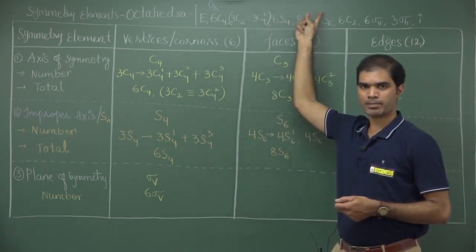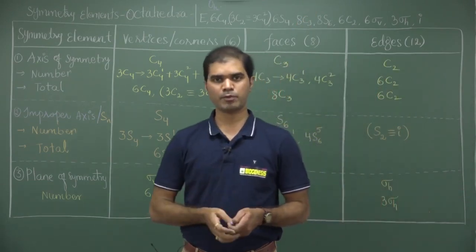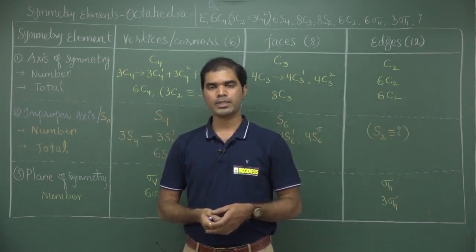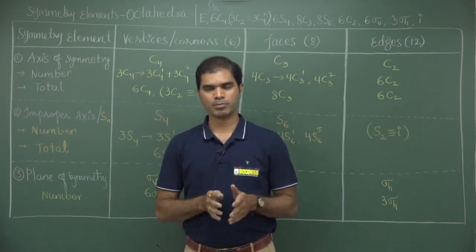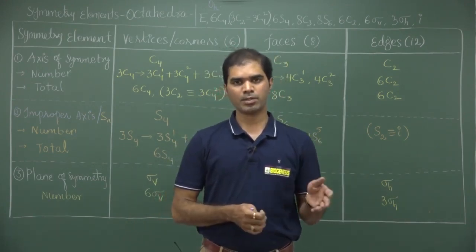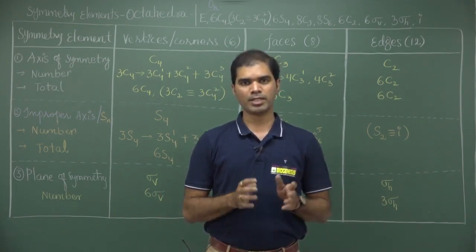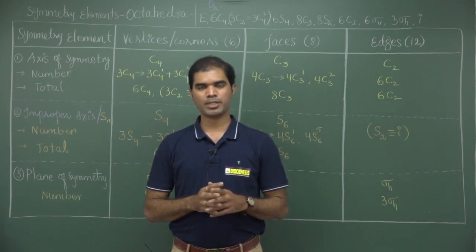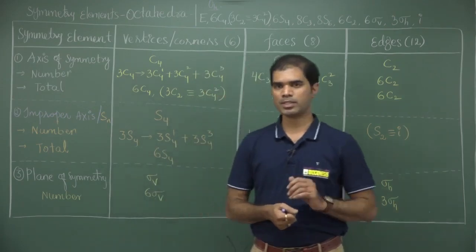All the symmetry elements have been written here. There are C4s present, and C2s that are generated from C4s. S4 is collinear to that C4 or the C2 generated from C4. There are C3s and collinear to these C3s are S6. Six C2s are also present, which are different from the C2s generated from C4. After that, there are also two different types of planes — vertical and horizontal — 9 in number: 6 sigma-v and 3 sigma-h. Along with this, there is also inversion, which can be generated from S2 or S6.